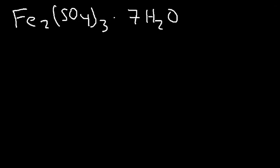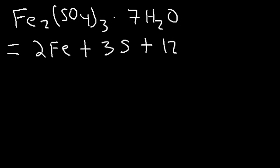This is going to be the last example. So go ahead and calculate the molar mass for this compound. So we have 2 Fe atoms, 3 sulfur atoms, and in Fe2(SO4)3, there's 12 oxygens. And then, separately, I'm going to add the seven water molecules.